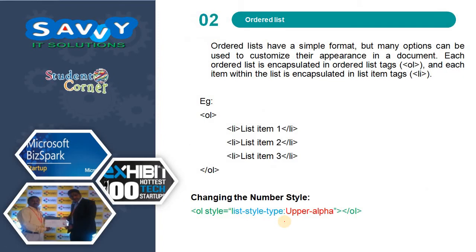Ordered lists have a simple format but many options can be used to customize their appearance in a document. Each ordered list is encapsulated in the OL tag and each item within the list is encapsulated in the LI tag.